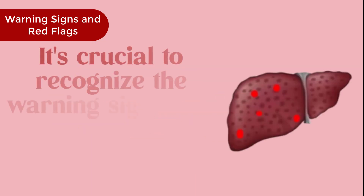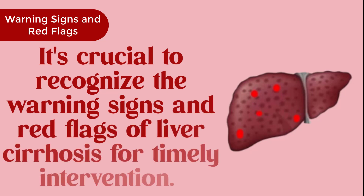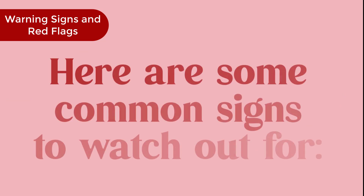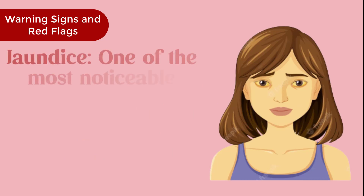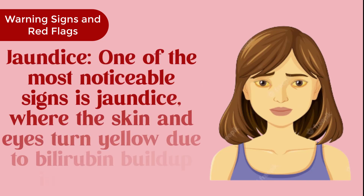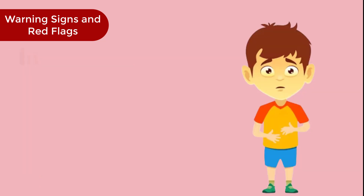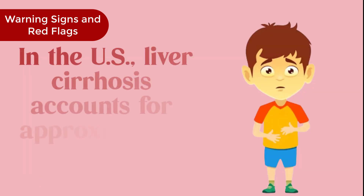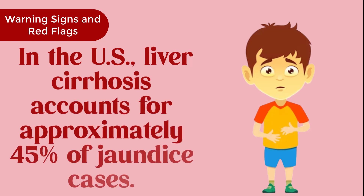Warning signs and red flags: It's crucial to recognize the warning signs of liver cirrhosis for timely intervention. Jaundice is one of the most noticeable signs, where the skin and eyes turn yellow due to bilirubin buildup in the blood. In the U.S., liver cirrhosis accounts for approximately 45% of jaundice cases.